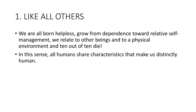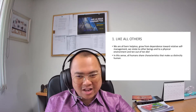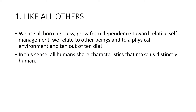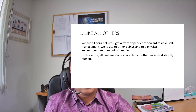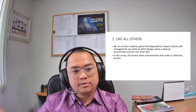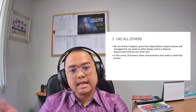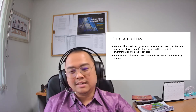Every human being is like all others. What does the book mean by that? That we are all born helpless, grow from dependence toward relative self-management. We relate to other beings and to a physical environment, and 10 out of 10 die. We are the same — like all others. In this sense, all humans share characteristics that make us distinctly human. We are born dependent, we grow toward relative self-management, we relate to others and the physical environment, and we die. In that sense, we are similar with one another.